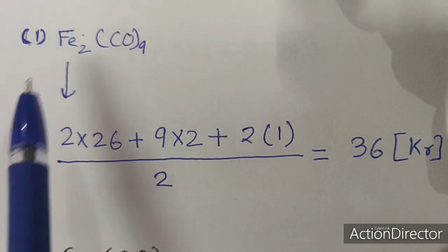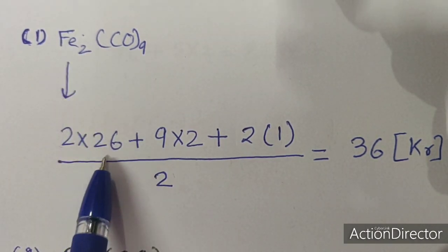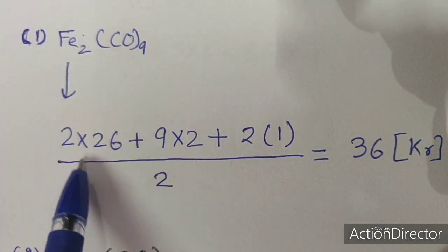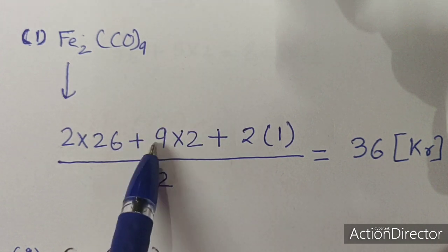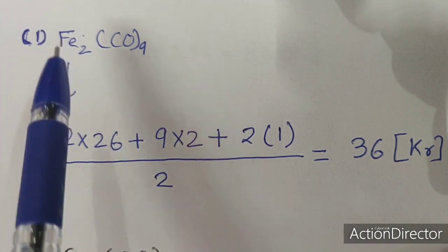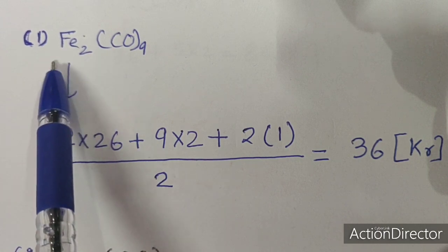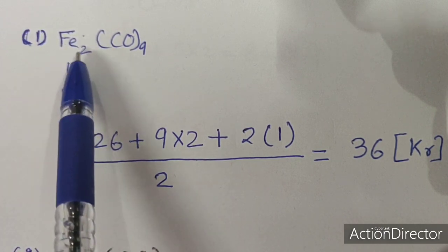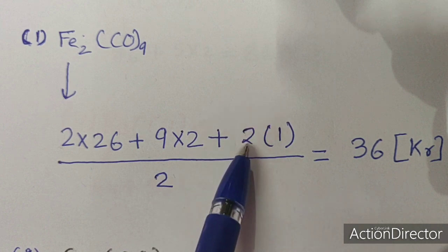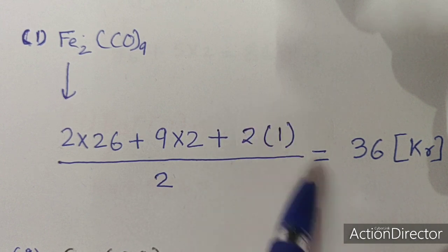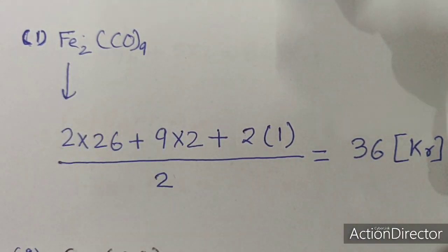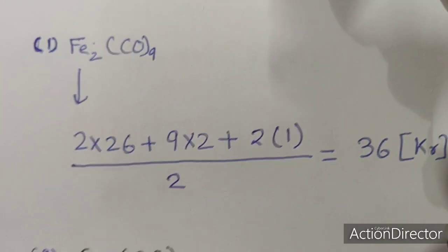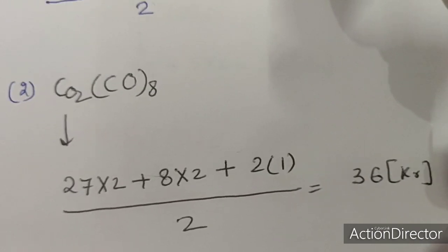The first example for polynuclear carbonyl is Fe2CO9. Iron's atomic number is 26, so 2 times 26 plus 9 carbonyls donate 2 electrons each, and there is 1 metal-metal bond donating 2 electrons, divided by 2 iron atoms. This equals 36, the atomic number of krypton — so this complex is obeying the EAN rule.